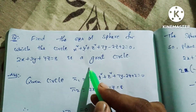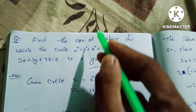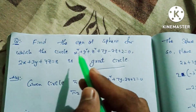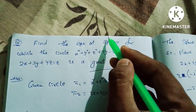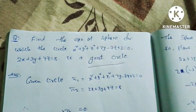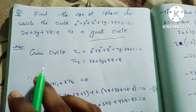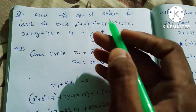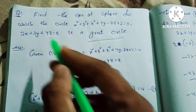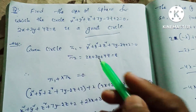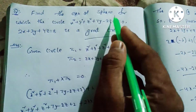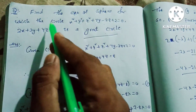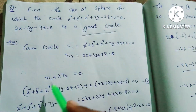We need to find the equation of the sphere. If you want the equation of the sphere, given the circle, we will get the equation of the sphere. The equation of the sphere for which the circle is a great circle follows a formula.